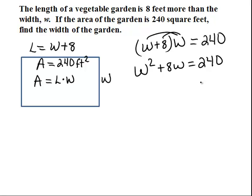So what we need to do, our goal will be to get this equation equal to 0, so that we can apply our box method of factoring to solve this equation. So what we'll do is subtract 240 from both sides.